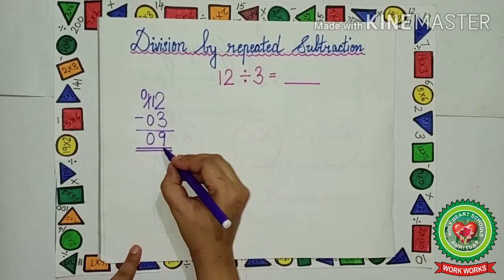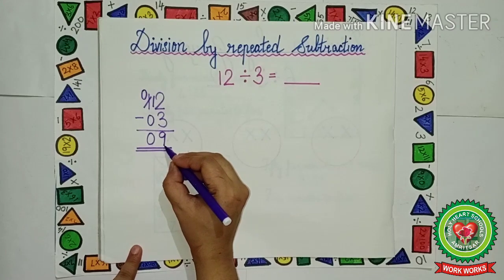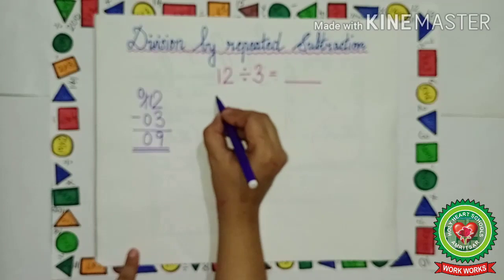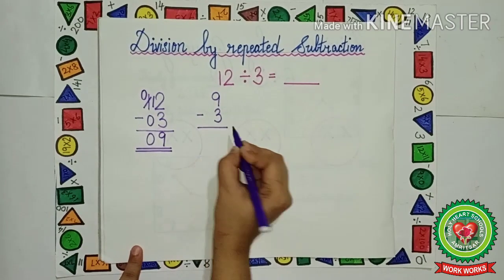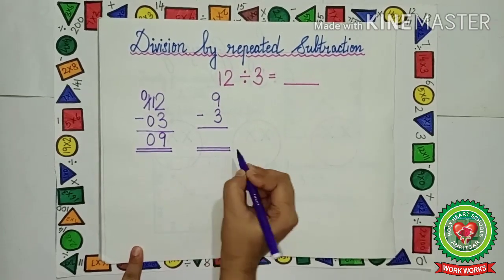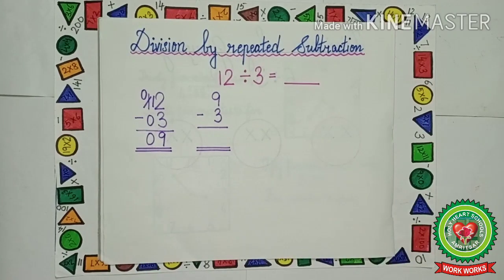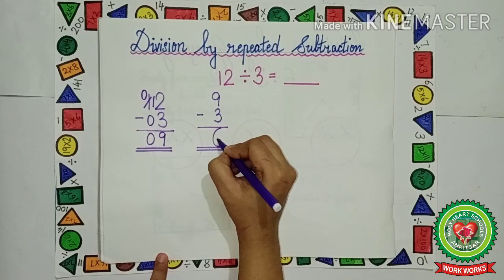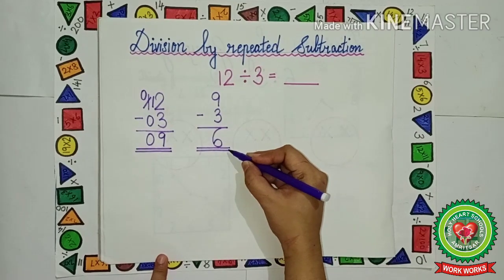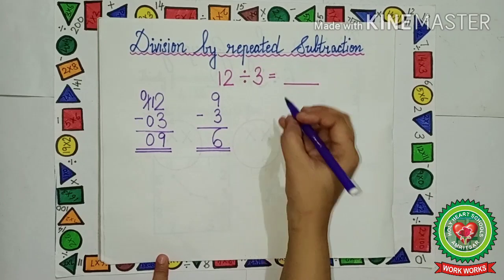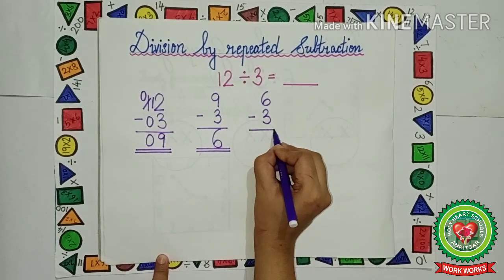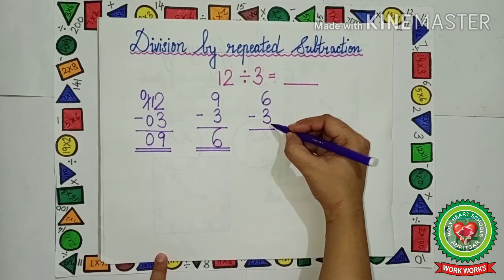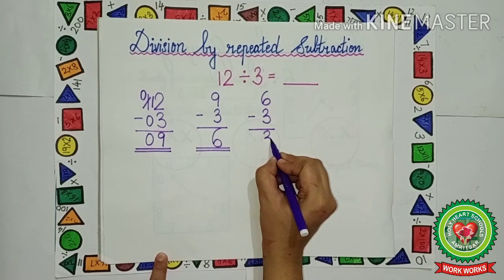Now we will take this number and again subtract it with 3. So again we write 9 minus 3. What is 9 minus 3? Let us count after 3 — 4, 5, 6, 7, 8, 9. The answer is 6. Now we have got 6. Now we have to subtract 3 from 6. So we write 6 minus 3. Quick subtraction: 6 minus 3 is 3. So we write 3 here.